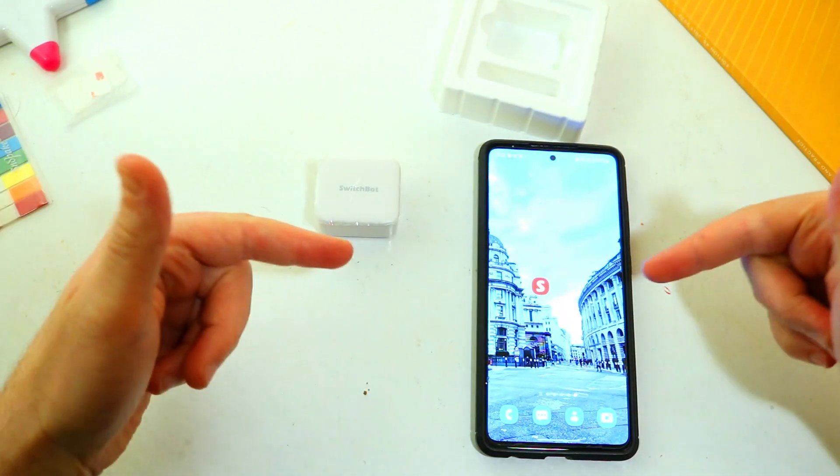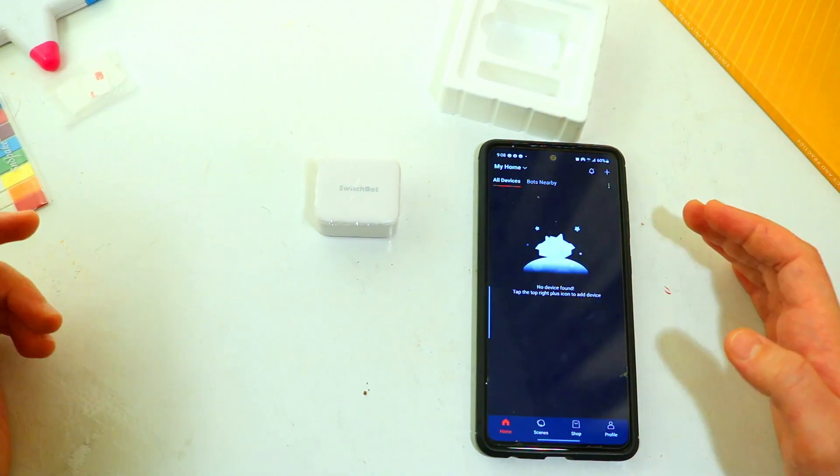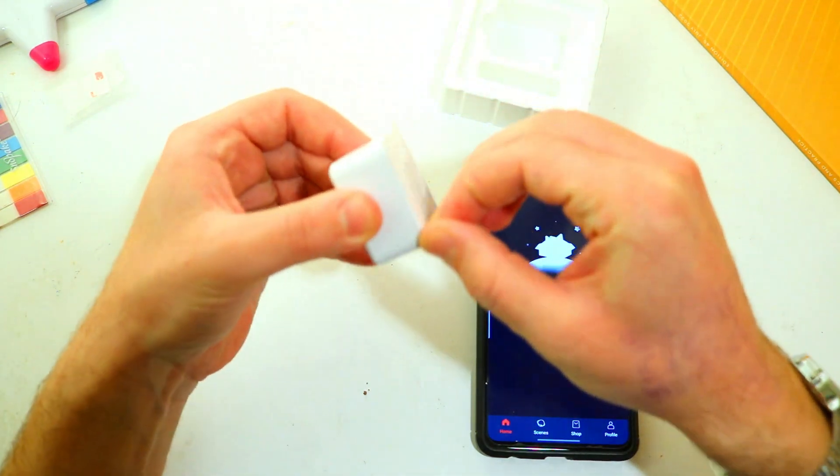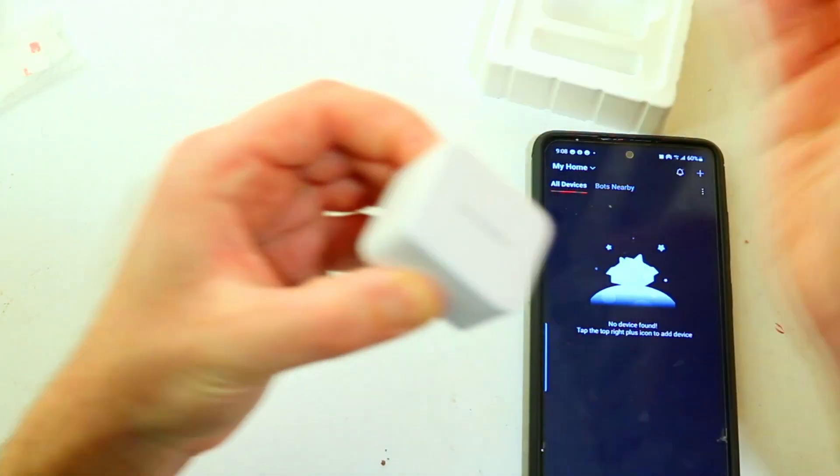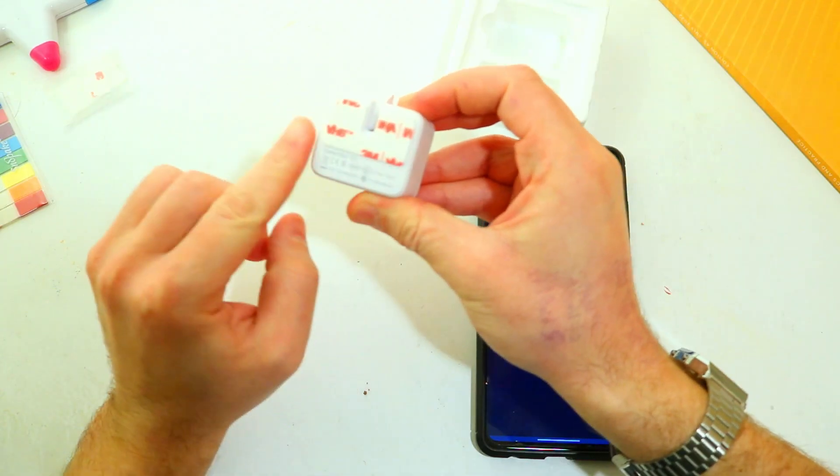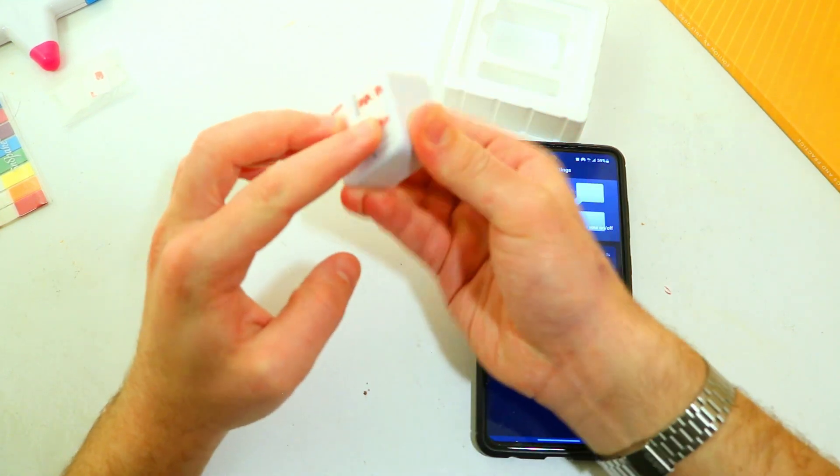The first thing I ask you to do is download the app, Switchbot. Actually the first thing you should do is peel this off. There we go. Now you've got some adhesive at the back here which I forgot to mention which is what sticks to the wall.